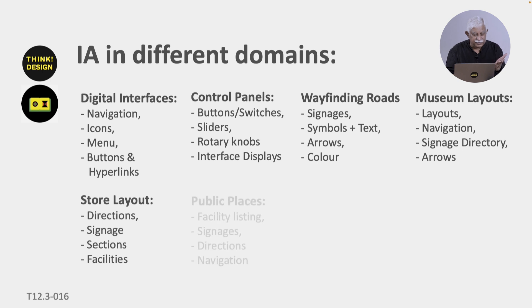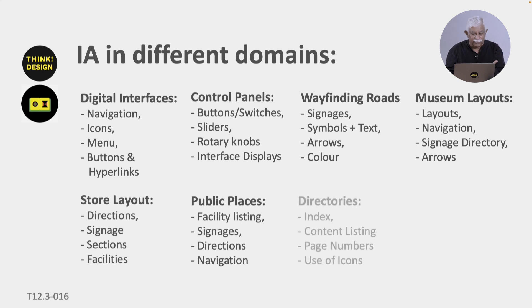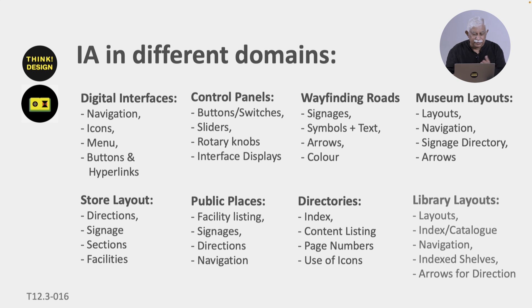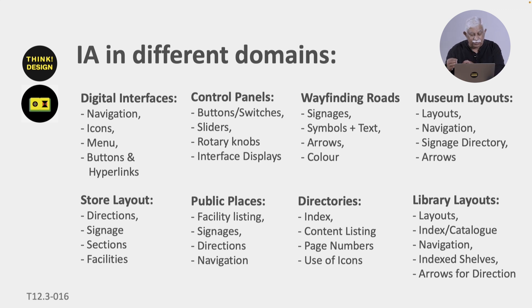Applications include digital interfaces, control panels, wayfinding systems, museum layouts, store layouts, public places, directories, and library layouts. You will see that there is a need for organizing information, putting it into categories, having an index or catalog, doing a navigation system, and having a signage system to locate things using arrows for direction. These are some of the common elements, but it depends exactly on what you are trying to do.